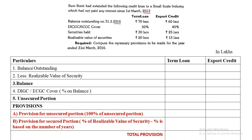Balance outstanding on 31st March 2016: 70 lakhs for term loan and 60 lakhs for export credit. We note down 70 and 60. Less the realizable value of securities: 20 lakhs and 15 lakhs. So 70 minus 20 is 50, and 60 minus 15 is 45. Next is DICGC/ECGC cover — for term loan it is 50% and for export credit it is 40%. This percentage is always on the balance: 50% of 50 is 25, and 40% of 45 is 18.